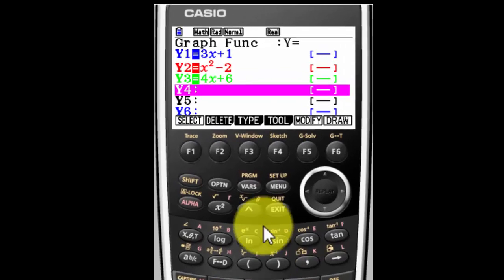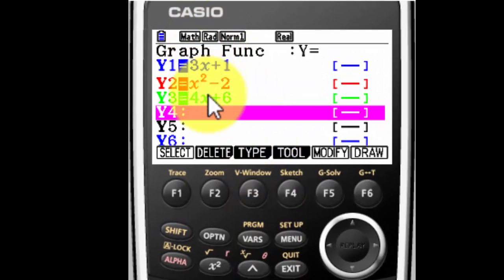Now I have a color calculator, so each of my lines will be color coded. If you don't have a color one, each of yours will have different shapes, like they might have dots or triangles or little dashes. And that will tell you.